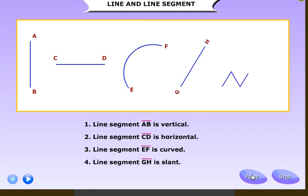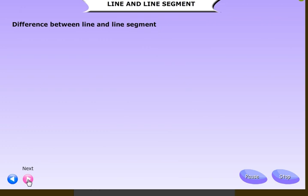Four, line segment GH is slant. Five, wavy lines are called zigzag lines. Then, next, difference between line and line segment.